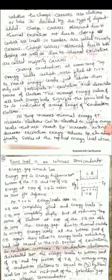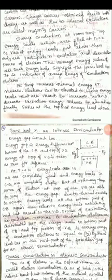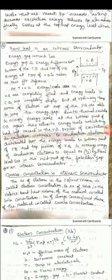During conduction at room temperature, energy levels filled at 0 Kelvin and vacant energy levels just above them participate in the excitation and de-excitation process of electrons. The average energy of all such energy levels signifies the Fermi level E_F, which is an indicator of the average energy of conduction electrons. As temperature increases, thermal energy kT also increases and electrons are elevated to higher vacant energy levels. As temperature decreases, E_F also reduces, finally settling at the topmost energy level at 0 Kelvin.